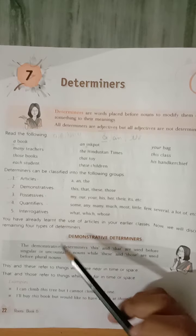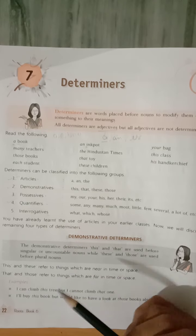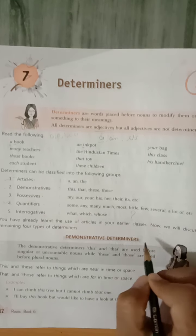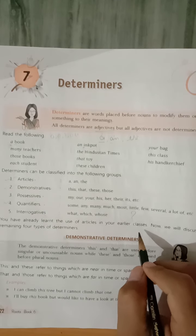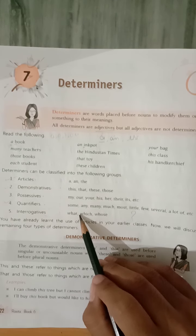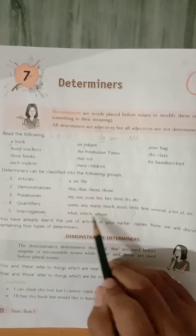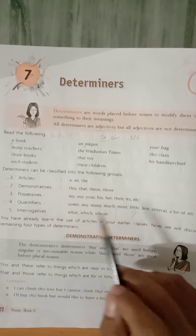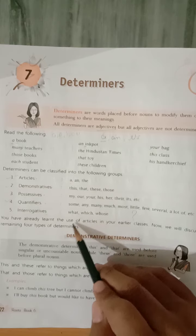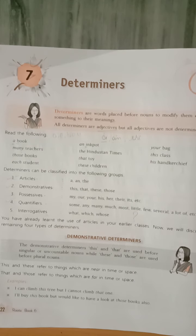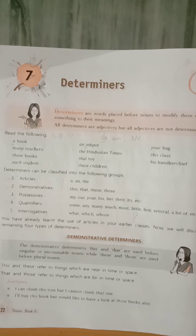An interrogative sentence always makes a question. Interrogative determiners include 'what', 'which', and 'whose'. For example: 'What is your name?', 'Which is your class?', 'Whose book is there?'